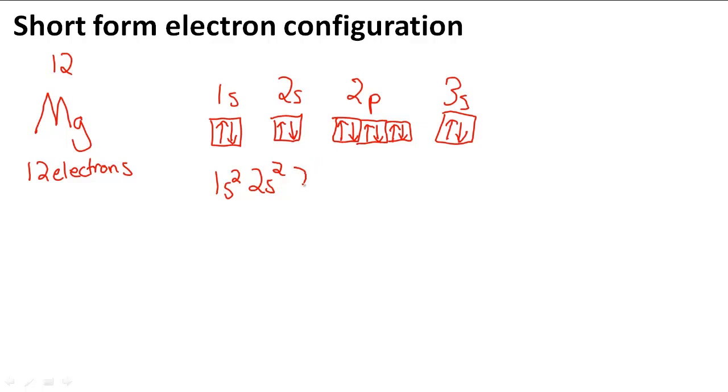Then here we have 2p with 6 electrons, so 2p⁶. And then we have 3s². So we have 1s² 2s² 2p⁶ 3s². This is the short form electron configuration of magnesium.